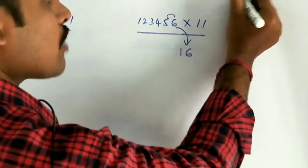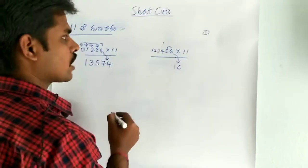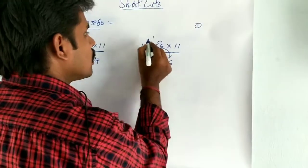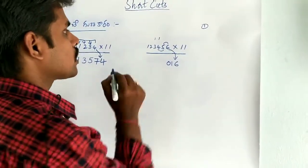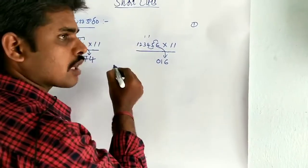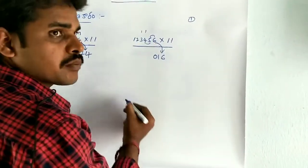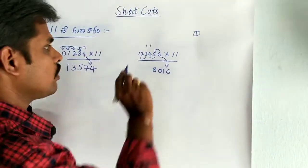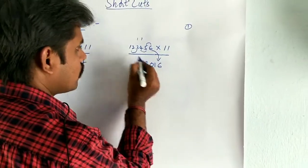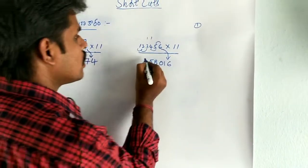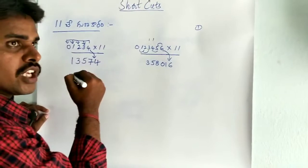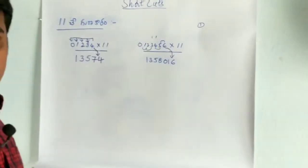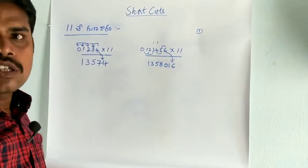So the next thing we have to do: 5 plus 4. 5 plus 4 is 99. 99 plus 10 is 100. 0 plus 1 is 1. So this will be simple to do this. Thank you.